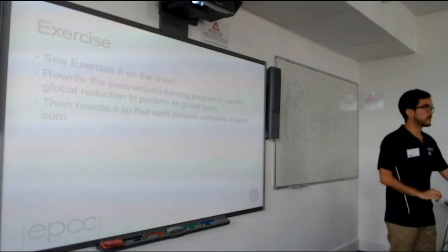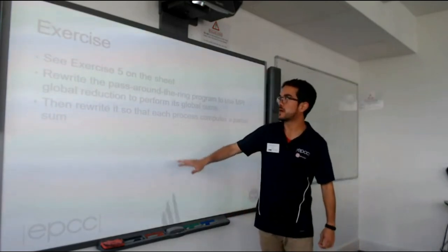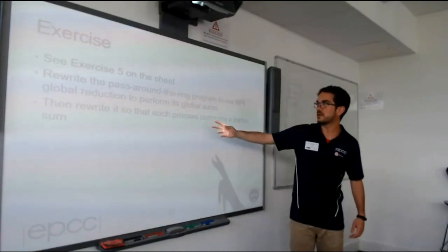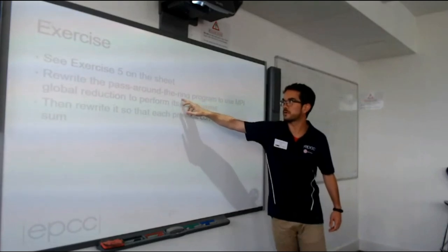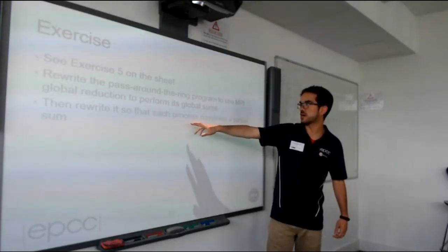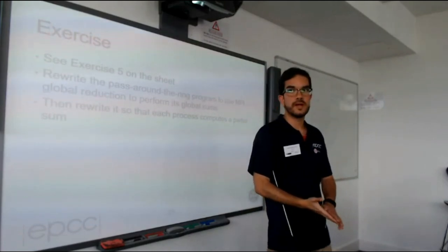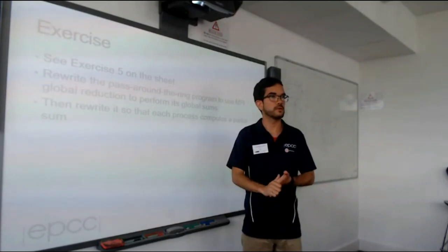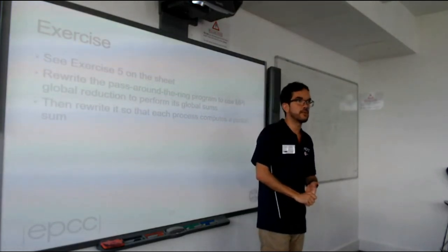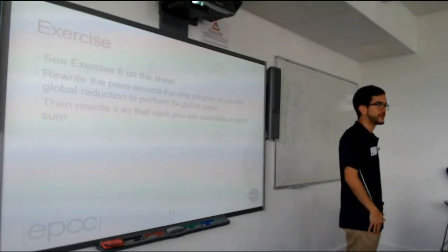To wrap up, you can continue with the previous exercise, or if you have finished, move on to exercise five — which is to rewrite exercise four using a global reduction to perform the global sum, and also rewrite it to compute a partial scan. If you have any questions about collective communications, I will be here. Thank you for your attention and enjoy the exercises.